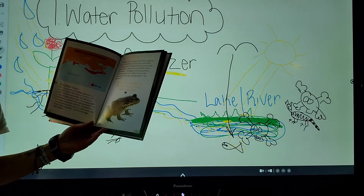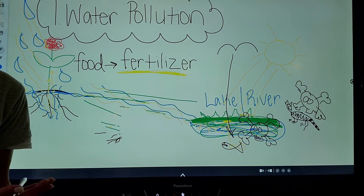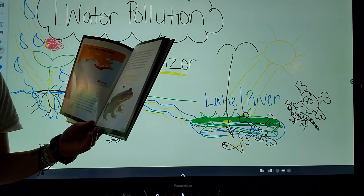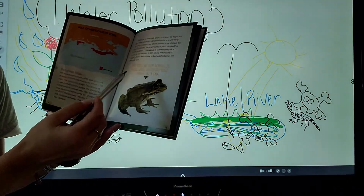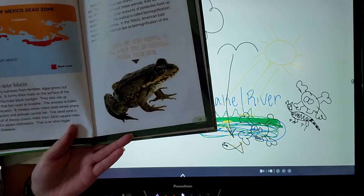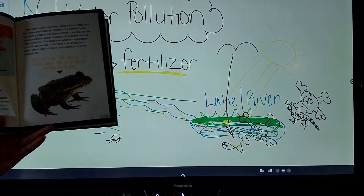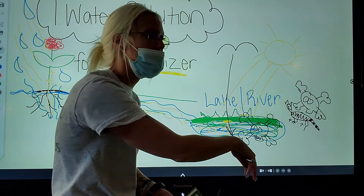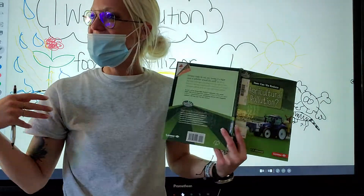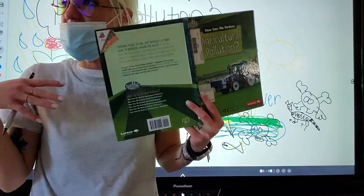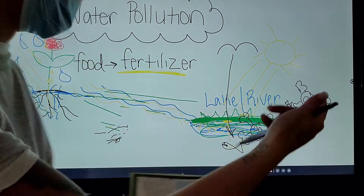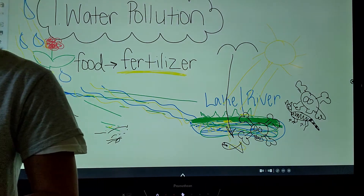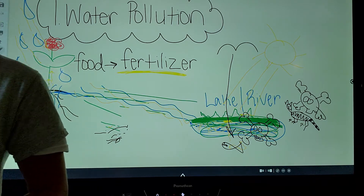Pesticides are very harmful to frogs. Frogs that live in ponds take these chemicals through their skin. The frog doesn't need to drink or eat the fish — it just lives in the pond and breathes through its skin. So the skin is being exposed to all of those chemicals from the one farmer over here who sprays his plants. Not very good.